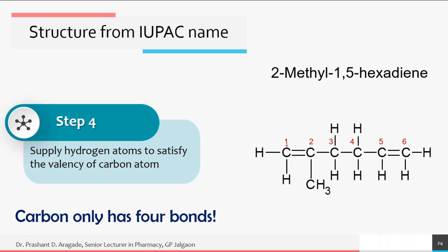For carbon number one, two hydrogen atoms are added — one bond to the chain, one double bond, and two hydrogens satisfying all four valencies. Likewise, add the appropriate number of hydrogen atoms to each carbon atom to satisfy their octet. You can also name this compound as 2-methyl-hexa-1,5-diene — both placing the position numbers before the alkane name or between the alkane name and '-ene' suffix are accepted.